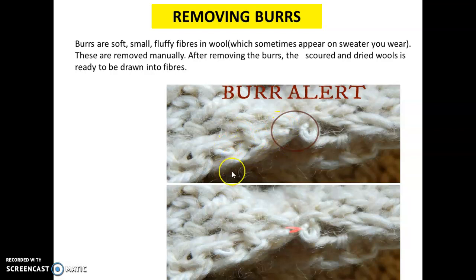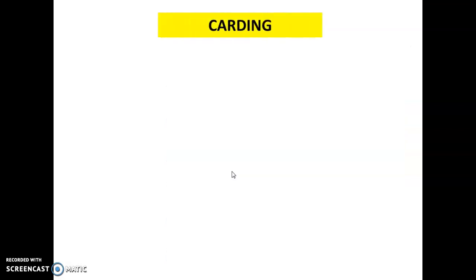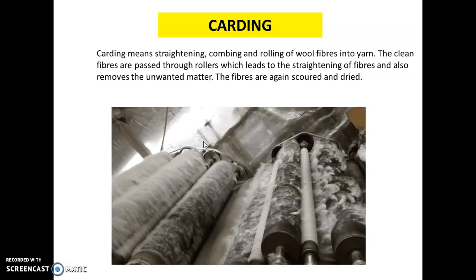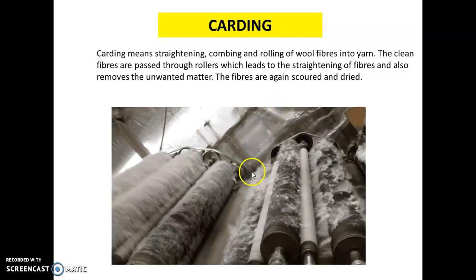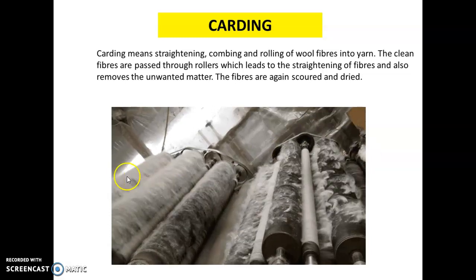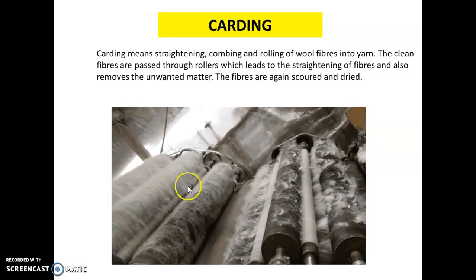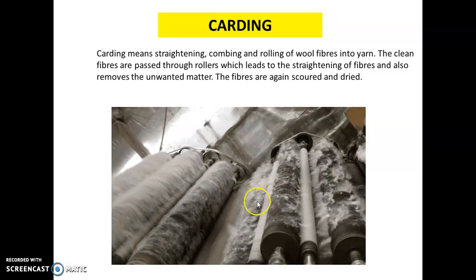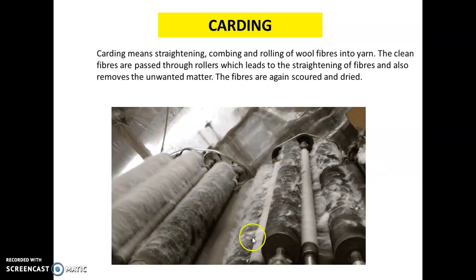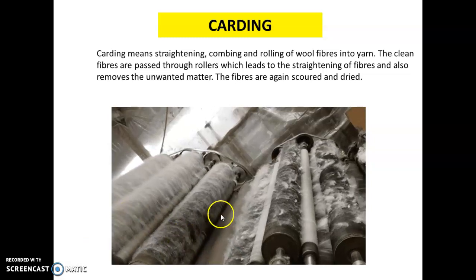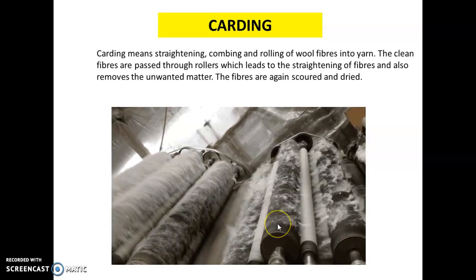Step 5 is carding. Carding means straightening, combing, and rolling of wool fibers into yarn. The clean fibers are passed through rollers which straighten them and remove unwanted matter. The fibers are then again scoured and dried.